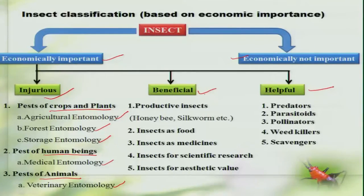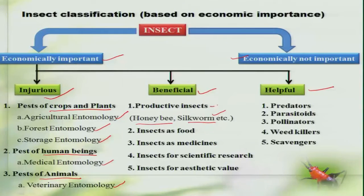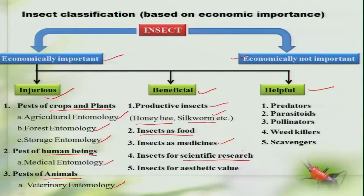Coming to the beneficial group of insects, we have insects such as the honey bee which directly give products in the form of honey, wax, etc., and the silkworm which gives silk. Similarly, the lac insects which give lac are all referred to as productive insects. In many parts of the world including India, insects also serve as food. Insects are also used in the medicinal field; Drosophila melanogaster is a classic example, also in scientific research. The beauty of butterflies and beetles means insects are also considered to have aesthetic value.